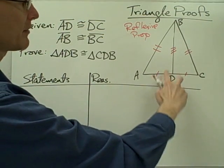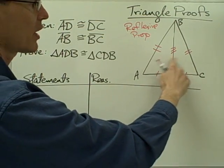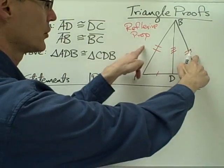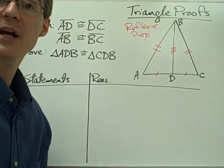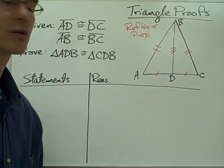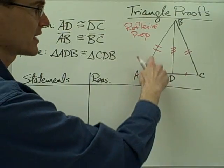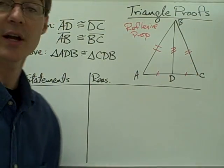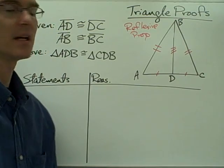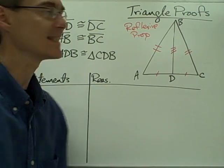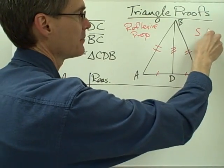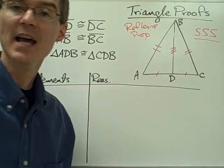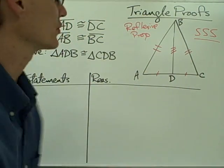Now notice what I have here is two triangles, and in these two triangles I have one, two, three pairs of sides congruent. In other words, the three sides on this triangle are congruent to the three sides of this triangle. That is the triangle congruence postulate known as the side-side-side postulate. So we're going to be using the side-side-side postulate to prove these two triangles congruent.